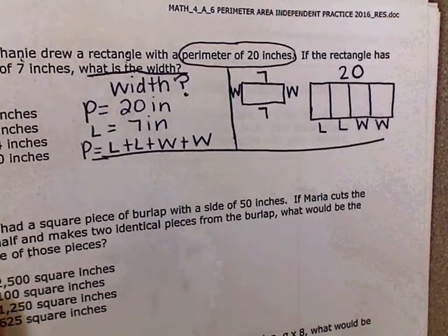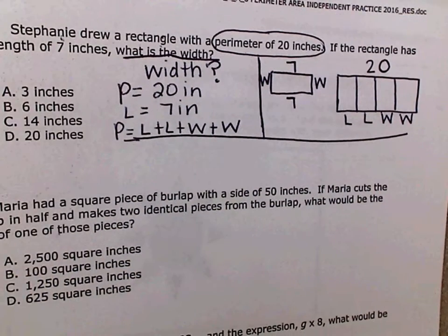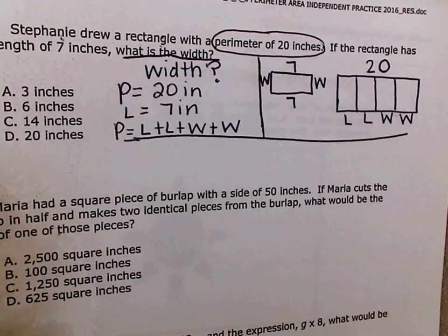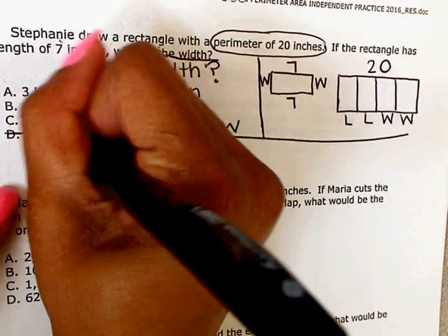If my total is 20 inches, I look at my answer choices. Are there some things I can get rid of already? What can I get rid of? I can get rid of D for sure.